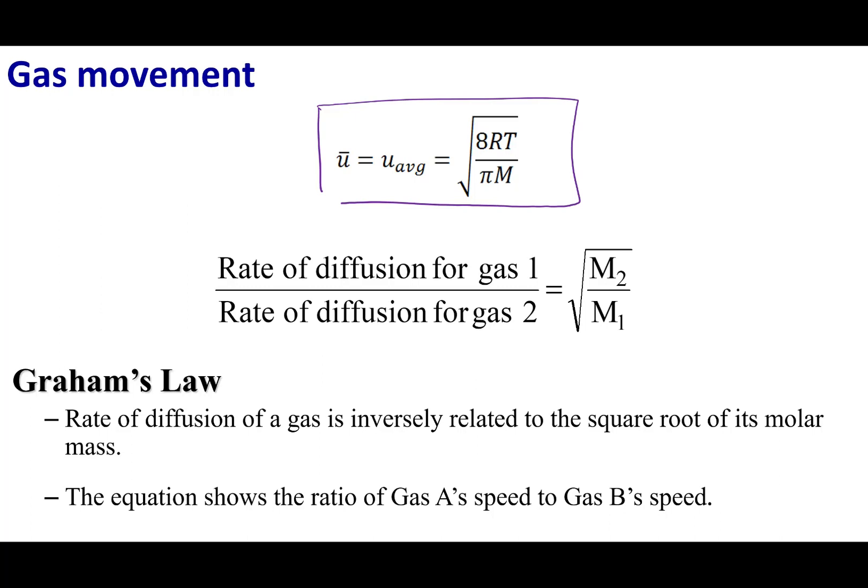Now, again, remember the take-home message in one of the quizzes I gave you. And that was that the average velocity is proportional to the square root of 1 over m.